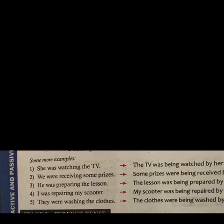'We were receiving some prizes' — here 'some prizes' is the object, so it becomes 'Some prizes were being received by them.' 'He was preparing the lesson' — the lesson is the object, so it becomes 'The lesson was being prepared by him.' Preparing becomes prepared — the third form.